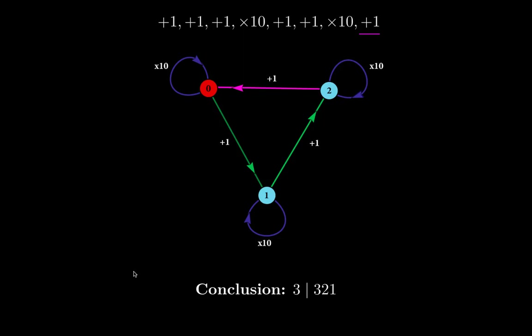Of course, this is a long way to do it. It's easier to apply the divisibility-by-3 criterion by adding the digits. But this is a graphical method — I wanted to show you this graphically because it looks nice. So this is another way to do it.